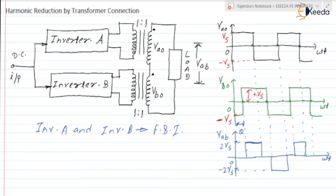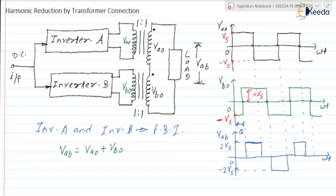The transformer has a turns ratio of 1:1. As the turns ratio is 1:1, we can say this voltage is also Va0, and this voltage is Vb0. The voltage across the load is equal to the addition of Va0 and Vb0, so Vab = Va0 + Vb0. The two secondary windings are connected in such a way to achieve this.